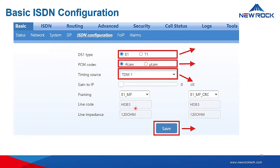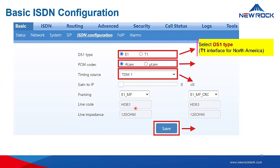Here is the basic ISDN configuration. You can select E1 or T1 if you are in North America. E1 is for the European region, and most Asian countries use E1 as well. However, some Asian countries also use T1, the DS1 type.